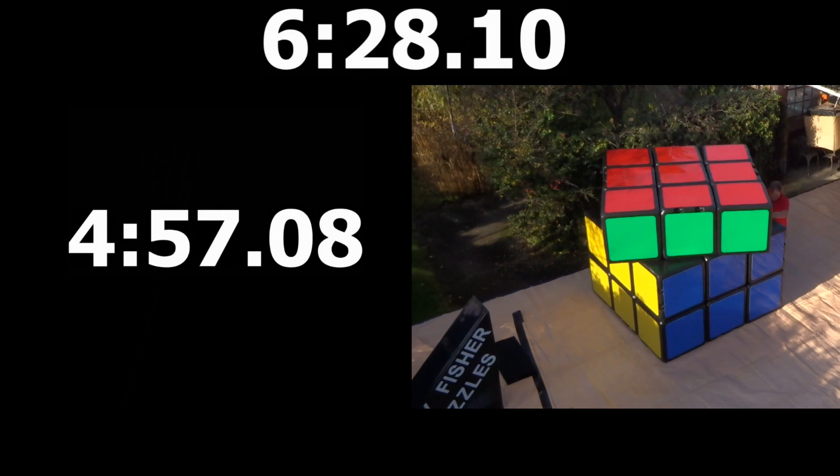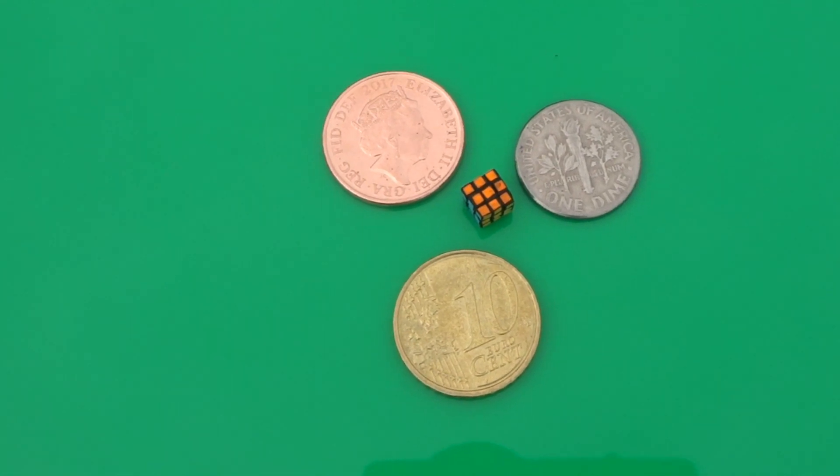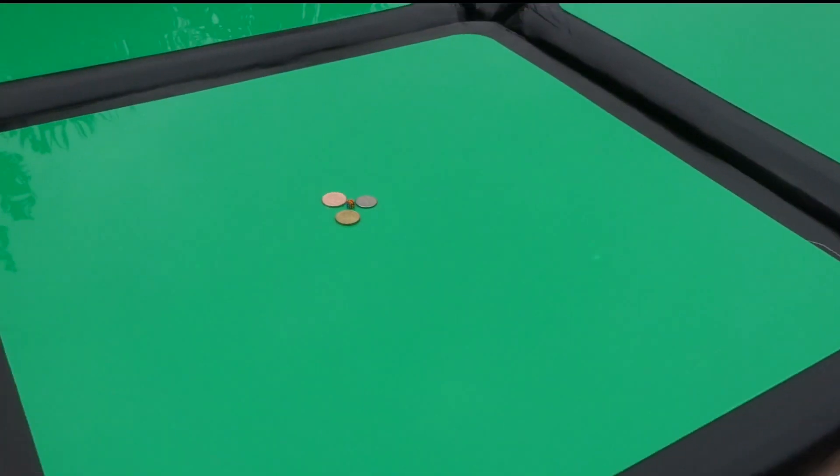So the tiny one was faster, but not by a huge amount. Here you can see a size comparison with a US dime, British penny and a Euro 10 cents, plus a giant cube of course.